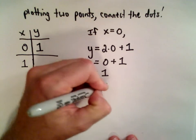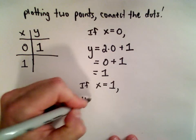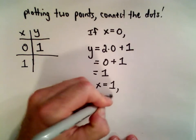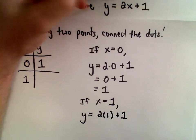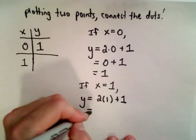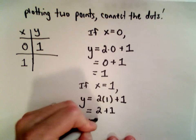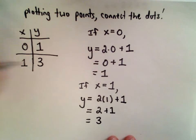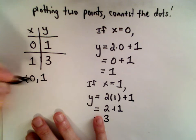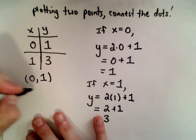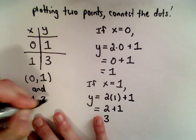And if we let x equal positive 1, we get y equals 2 times 1 plus 1. Well, 2 times 1 is 2, plus 1 gives us 3. So I've got two points on the graph: 0 comma 1 and 1 comma 3.